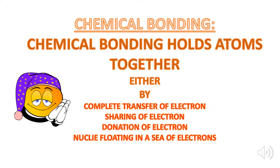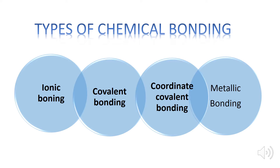So what is chemical bonding? In simple words, chemical bonding holds atoms together either by complete transfer of electrons, or the sharing of electrons, or by the donation of electrons, or the nuclei floating in a sea of electrons. As a result, the atoms become happy to live together because they complete their valence shell and become stable.